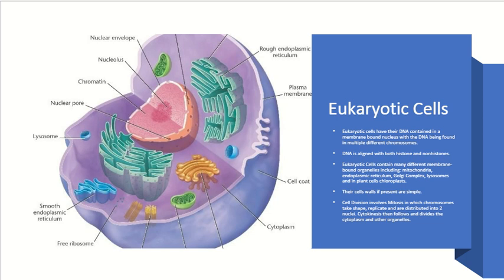If eukaryotic cells have cell walls, as in the case of plants, the cell walls are very simple. Cell division involves mitosis to form new cells, in which chromosomes take shape, replicate, and are distributed into two different nuclei as the larger cell breaks up into two new cells. Cytokinesis then follows and divides the cytoplasm into two new cells.